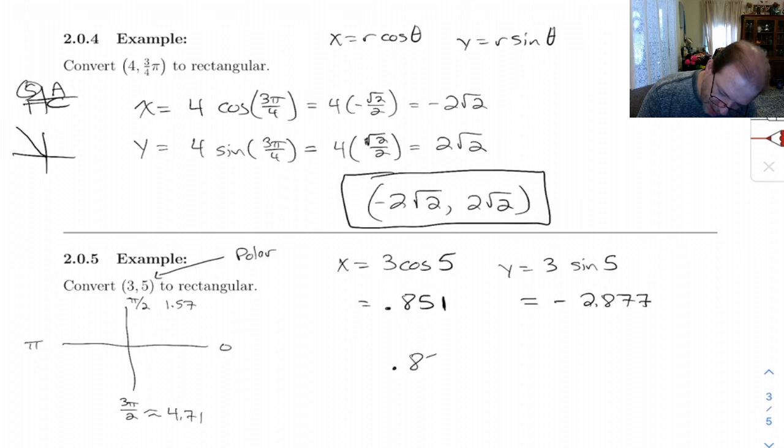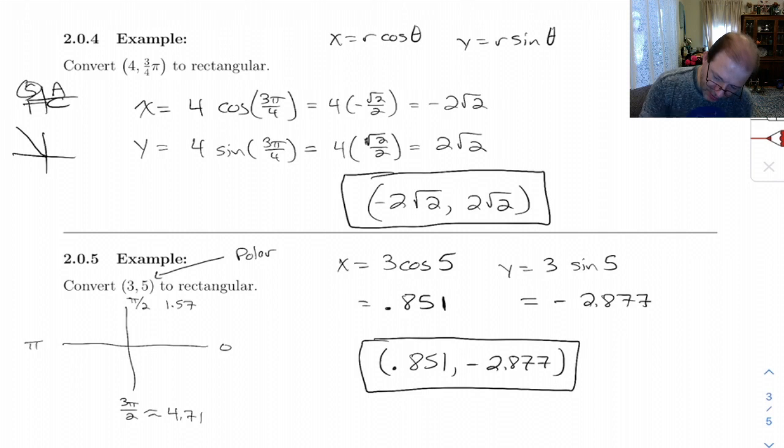We get to 0.851, negative 2.877. And that makes good sense. That's definitely in quadrant 4, because we go 0.851 and then down some amount.